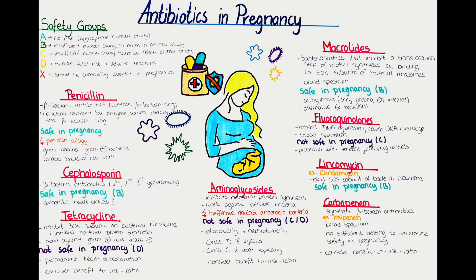First we'll start off by mentioning the grading system for medication in pregnancy. This is a system that provides risk assessment guidelines for individual medications based on their relative safety for use in pregnancy. It also indicates the potential of a drug to cause birth defects in a fetus during pregnancy.